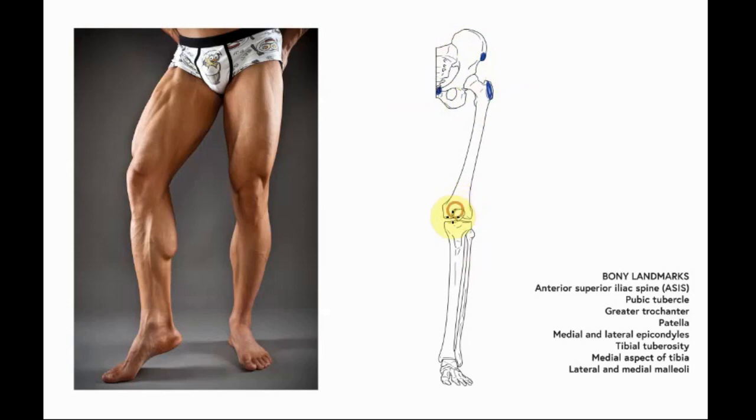The patella is this small triangular sesamoid bone at the front of the joint. We then have our medial and lateral epicondyles. Now a condyle is this rounded articular surface at the distal end of the femur. The word epi means next to or above, and so these two little bumps that are just next to and above the condyles are the epicondyles.